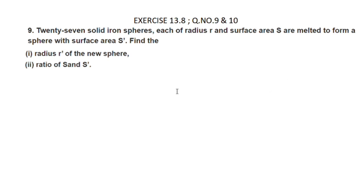The next question is: 27 solid iron spheres, each of radius R and surface area S, are melted to form a sphere with surface area S'. Find the radius R' of the new sphere.